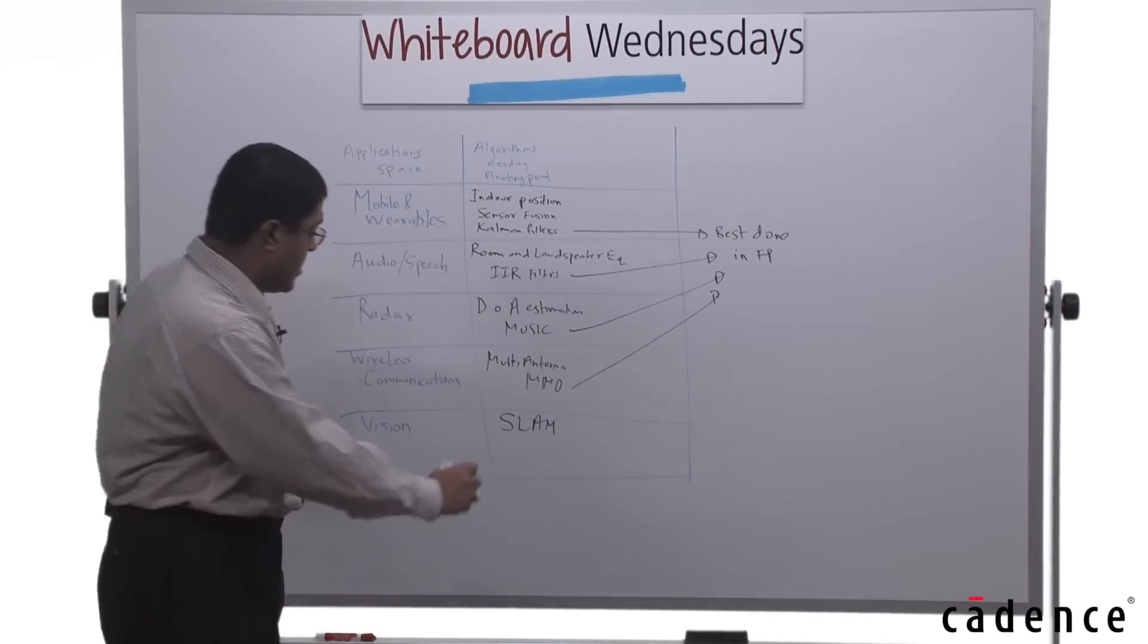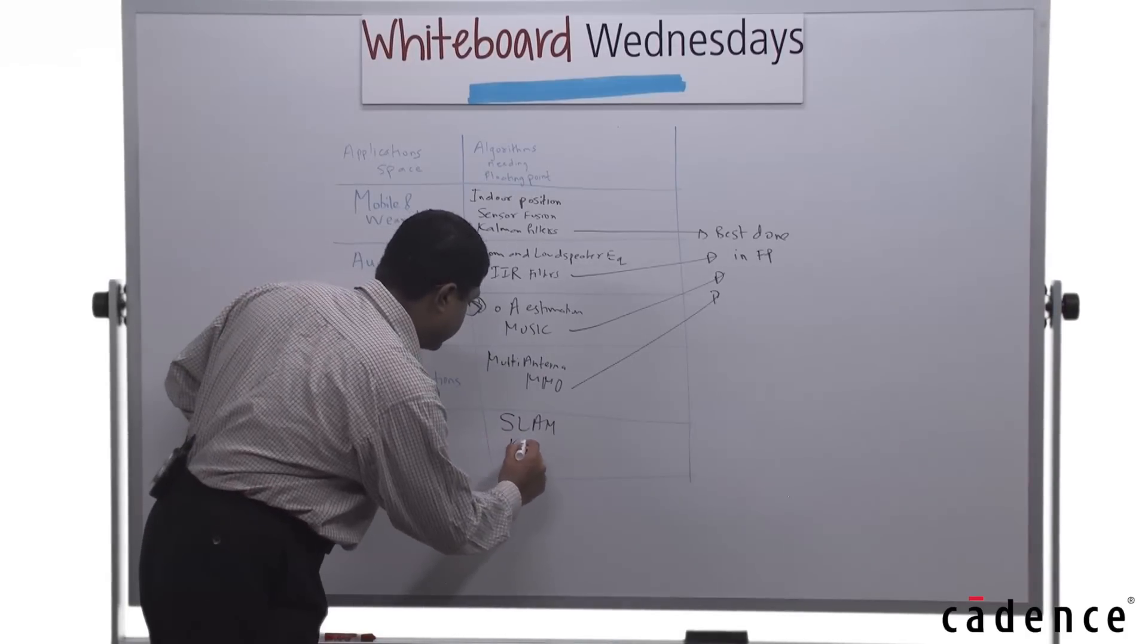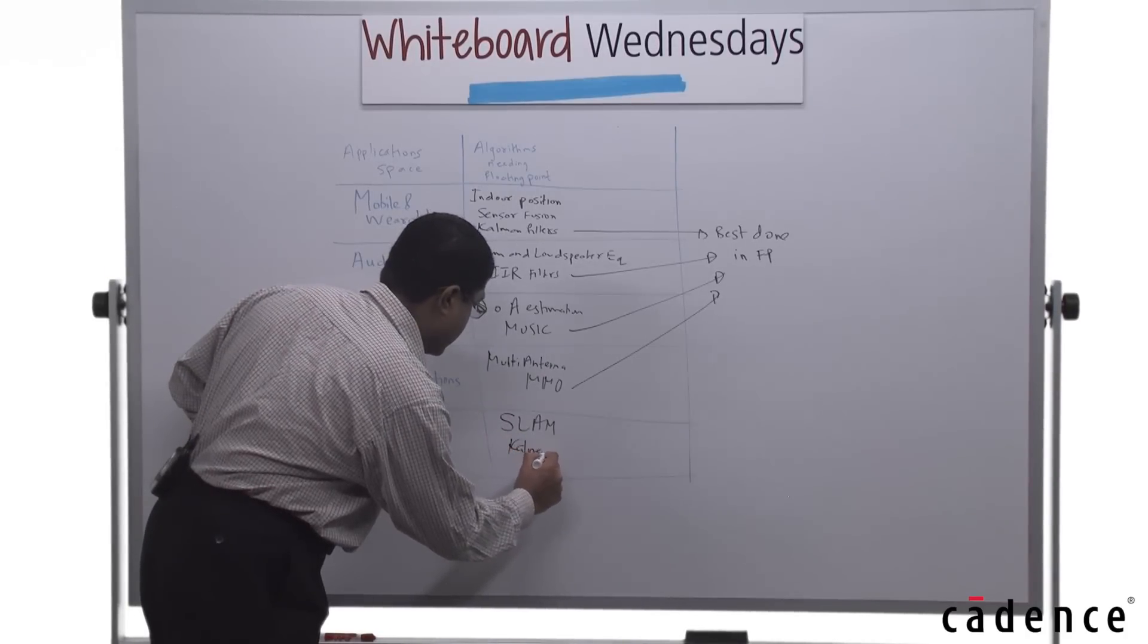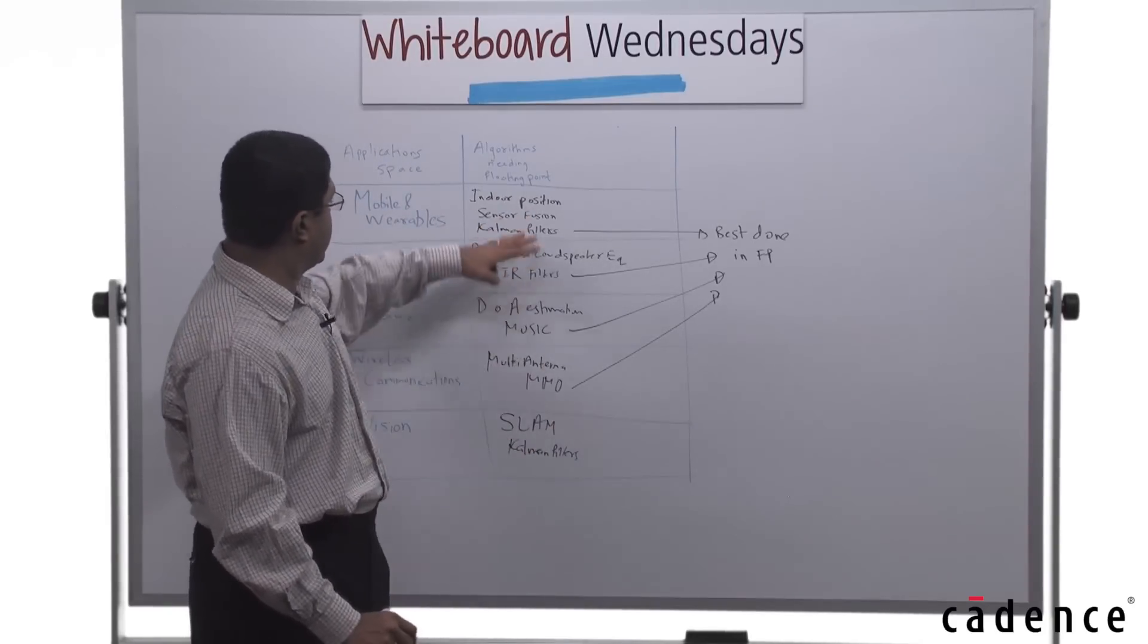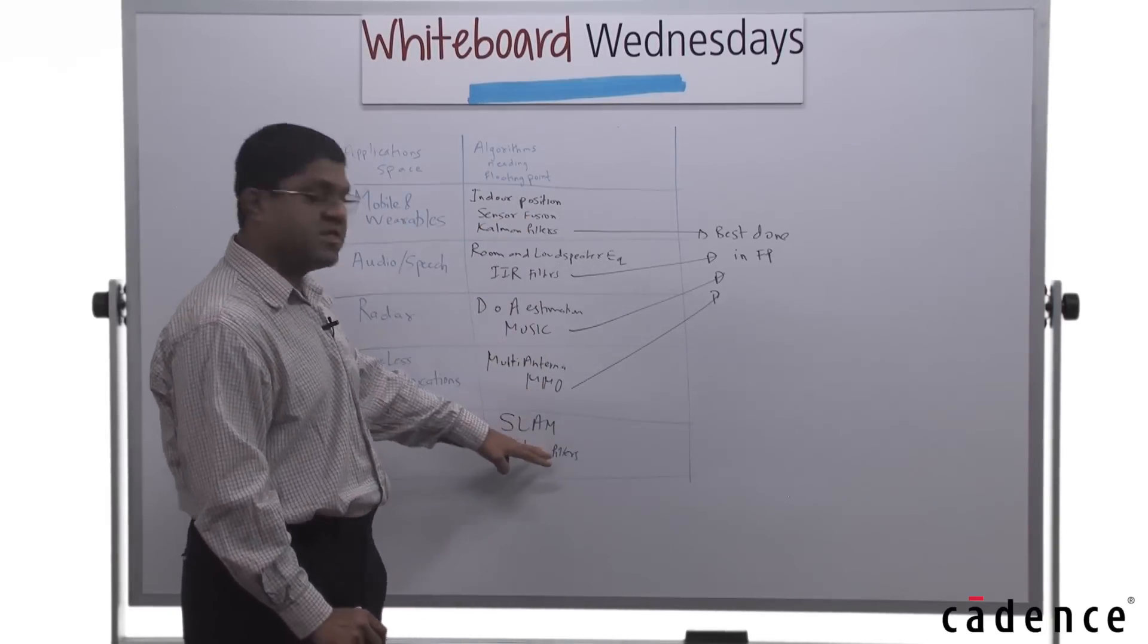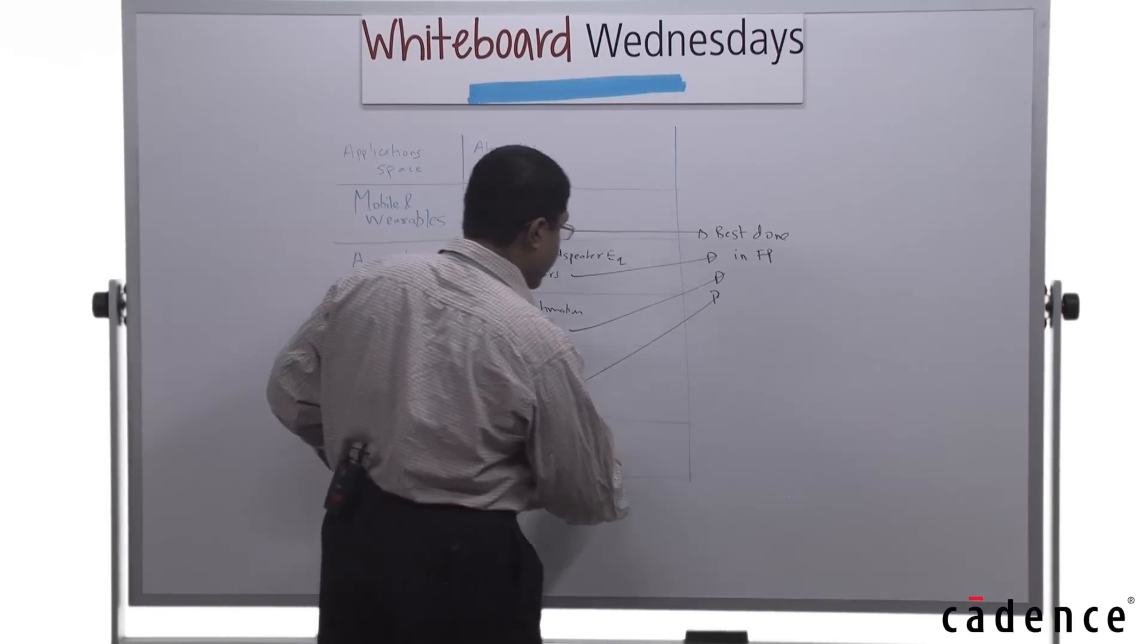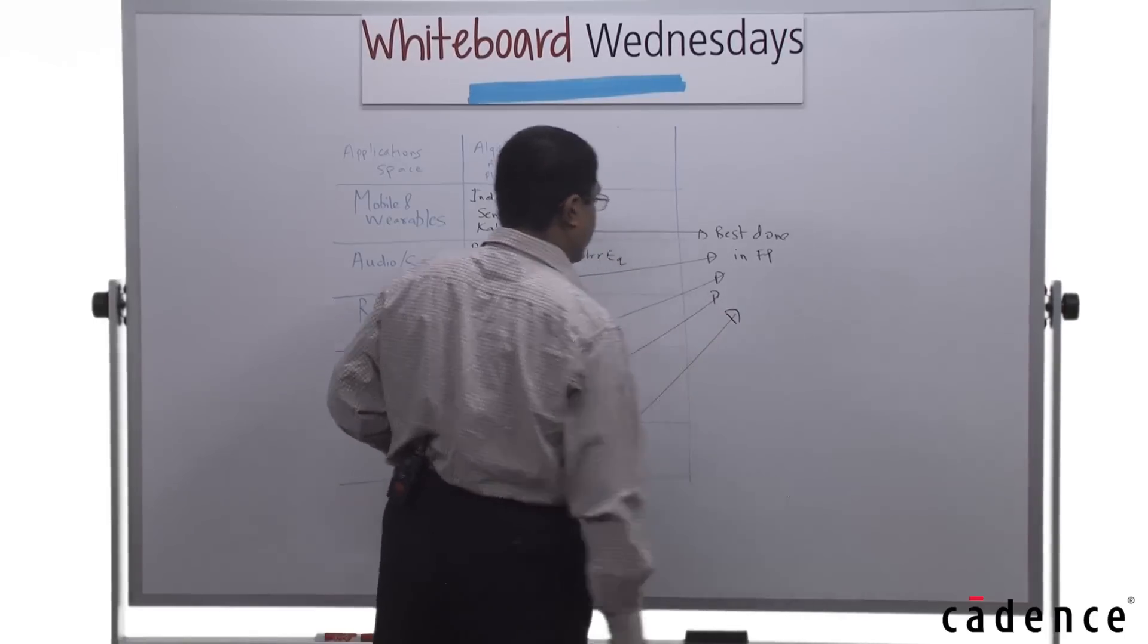and mapping—use Kalman filters a lot, again with relatively larger state matrices compared to the mobile applications, but still Kalman filters are best done using floating point.